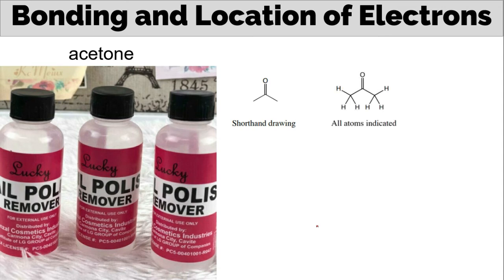Next, we have the Kekule formula. This is a structural formula which displays the atoms of the molecule in the order they are bonded. It also depicts how the atoms are bonded to one another.